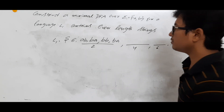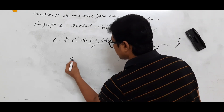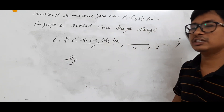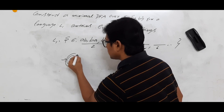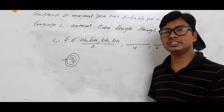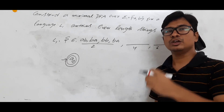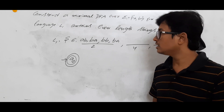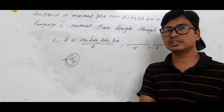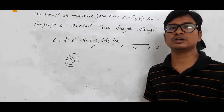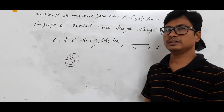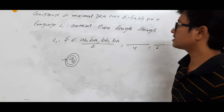As I said earlier, if epsilon is in the language, then the initial state will also act as a final state. A string is accepted by the DFA if, starting from the initial state and reading the entire string, you end up in a final state. Epsilon is the empty string, so without reading anything, we must already be in a final state — meaning the initial state itself is the final state.